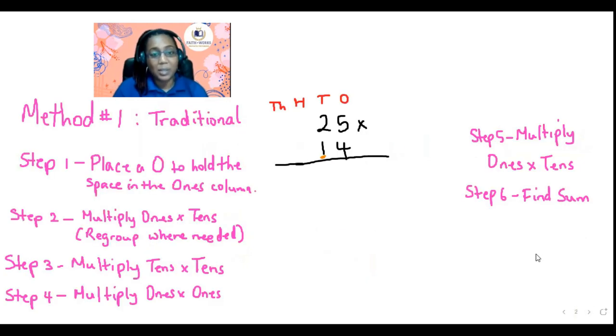So let's look at the first method. This method I like to call the traditional method. This is the method I used to do in school way back in the day when dinosaurs roamed. This is the method I used to use and it's called the traditional method. Let's look at the steps that I've written on the side. Step number one says place a zero to hold a space in the ones column. So let's do it together. I'm going to put the zero in the space to hold the ones column. You can put a little smiley face there, he's holding the space happily. Next we multiply the tens and the ones.